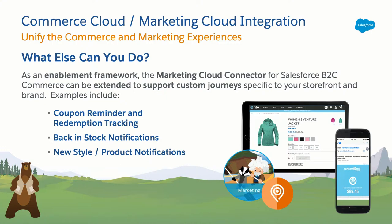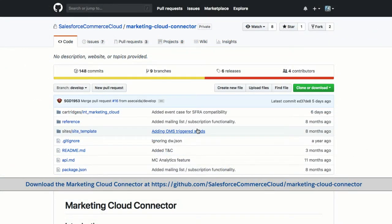This is a development enablement framework, so customers extend the native use cases to do other things relevant to their customers. A couple of examples are coupon reminder and redemption tracking — there's a solution kit for this as well. We also do back-in-stock notifications and new style or new product notifications through the Marketing Cloud Connector. If you want to download the connector, you need to be a Commerce Cloud customer or partner, and you can download it from GitHub at github.com/salesforcecommercecloud/marketing-cloud-connector.